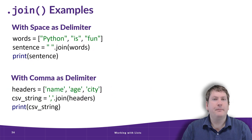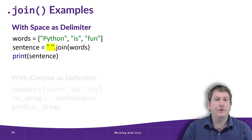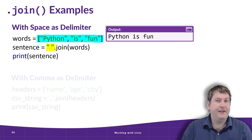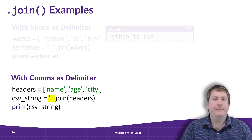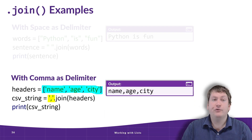Let's look at two examples. In the first, we have a space as the delimiter and a list of words: 'Python', 'is', and 'fun'. It puts a space between each word to form a new string, giving us 'Python is fun'. In the second example the delimiter is a comma and we call join on a headers list with 'name', 'age', and 'city'. It puts a comma between each value, and the output would be the string 'name,age,city'. You can see how this is the opposite of split.